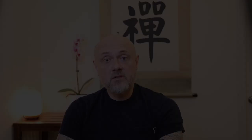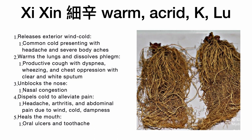The third herb in this formula is Xi Xin — wild Chinese ginger. A warm, acrid herb that enters the lung and kidney channels. It releases exterior wind-cold and treats the common cold presenting with headache and severe body aches. This herb is predominantly used for excess-type wind-cold where perspiration is not present. Xi Xin also warms the lungs and dissolves phlegm.